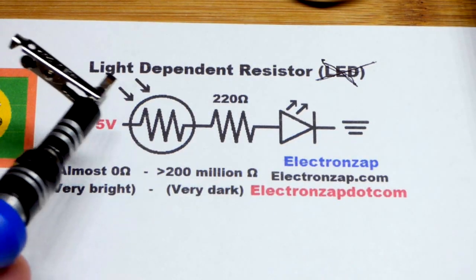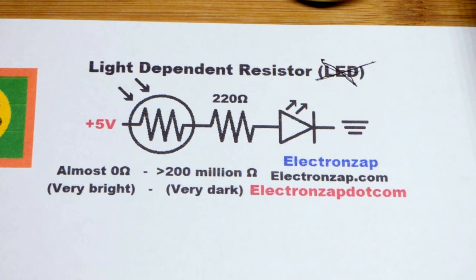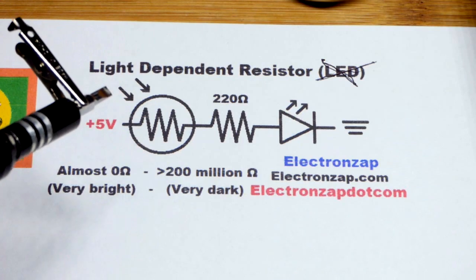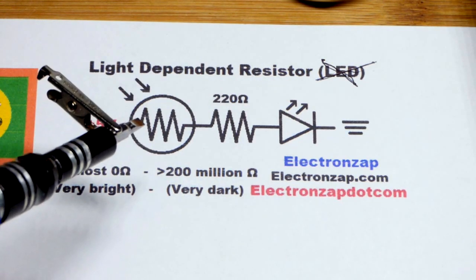So now in this video, we're going to look at the light dependent resistor. I accidentally wrote LED there instead of LDR, but in any case, LDR is how it's abbreviated. It's also often called a photo resistor. It's pretty straightforward.